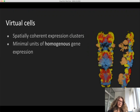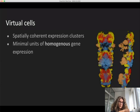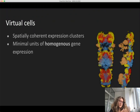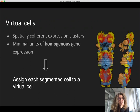Instead we defined so-called virtual cells — spatially coherent expression clusters. You have 205 images showing 205 different genes, and you try to build minimal units with homogeneous gene expression. These are not necessarily single cells — they could be pairs or small clusters of cells — but they always come together. We have around 5,000 of these virtual cells. Instead of assigning every gene independently, we first build possible expression profiles from these virtual cells, then assign each segmented cell to the best-matching spatially coherent expression cluster.